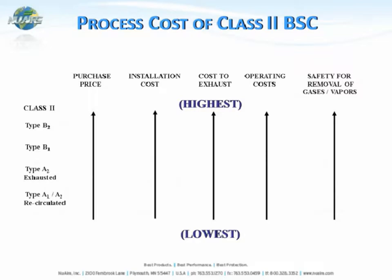Looking at the process cost of a Class II BSC, the lowest purchase price, installation cost, cost to exhaust, and operating cost — while also offering the lowest level of safety — would be a recirculated biological safety cabinet, like a Type A1 or A2. Costs rise as you move from A2 exhausted to B1 to B2, because you're exhausting much more of the air, and the initial purchase price and installation cost increase as well.